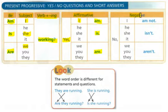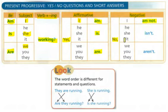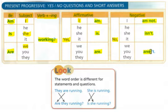For the negative, or no answers: no, I am not. No, he, she, or it is not, or isn't. No, we, you, they are not, or aren't.